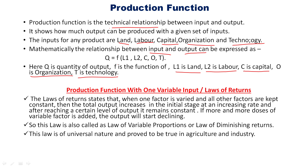The next topic is production function with one variable input, also known as law of variable proportions, law of returns, or law of diminishing returns. It is a model which illustrates how businesses decide what to produce in response to demand when only one input can be changed. Businesses in their initial stages, on a trial and error basis, try to slowly increase the production by changing one resource at a time.